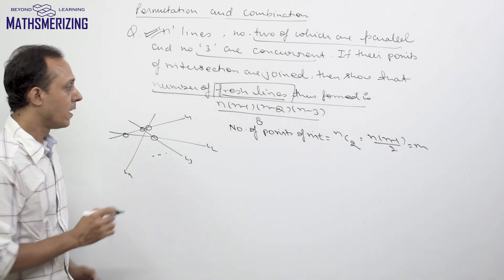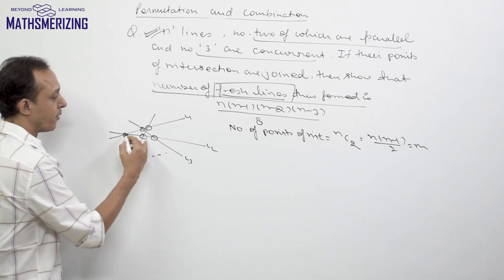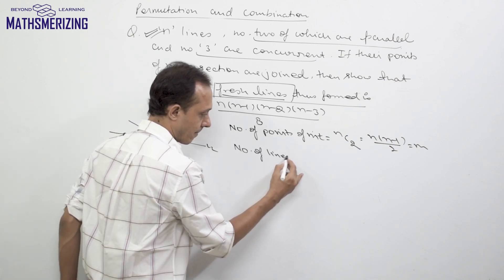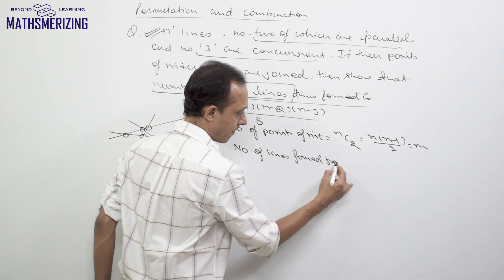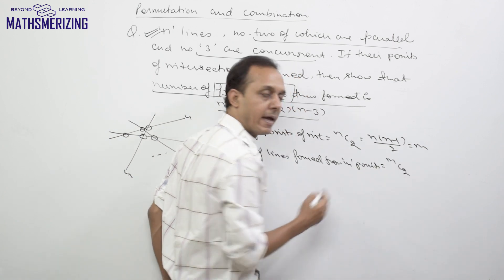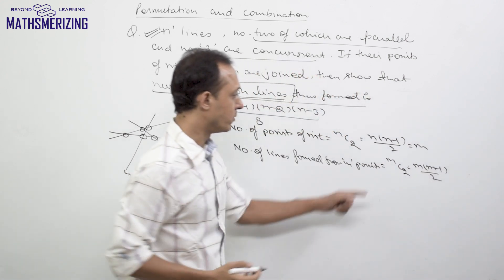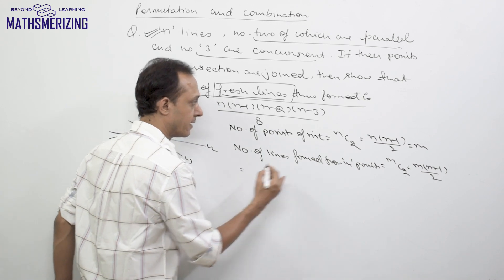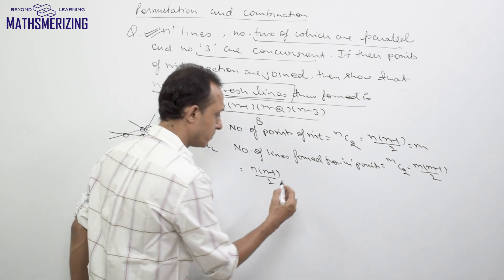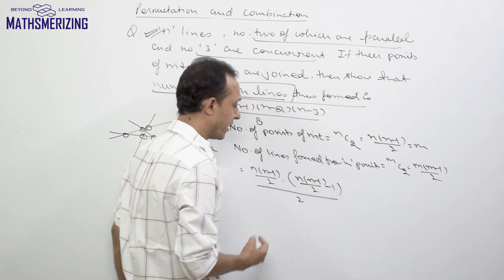Now suppose this is m. If I take these m points and start joining these m points, then the number of lines that can be formed is simply mC2, which is m(m-1)/2. I will put the value of m here, so I will get n(n-1)/2 times [n(n-1)/2 - 1], and then divide by 2.